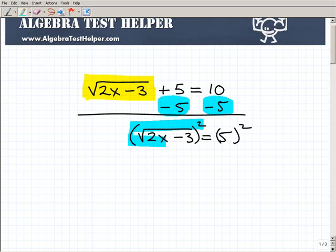So here, I'm going to square both sides of the equation with the goal of getting rid of this radical sign. So the square root of 2x minus 3 squared is simply 2x minus 3. And 5 squared, of course, is 25.